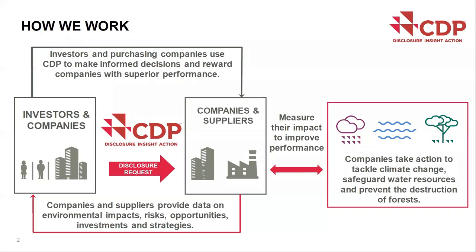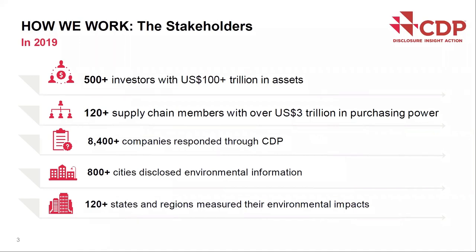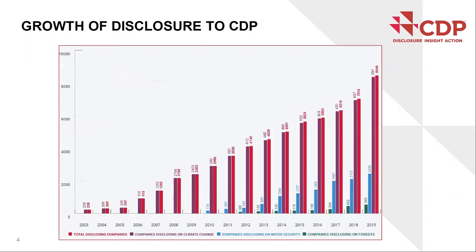CDP was born 20 years ago in London. Back then, the 500 biggest listed companies received a request in paper format to disclose emission data from a smaller pool of investor signatories. Every year, CDP receives the mandate from our investors to request companies to disclose environmental information. The total value of assets represented by our investor signatories and members has grown year on year to a total of over a hundred trillion dollars this year. Moreover, our platform is utilised by a network of big purchasing companies who, through CDP, request their suppliers to report data on climate change, water security, and deforestation. The number of companies disclosing through our platform increases year on year — this year, more than 8,000 companies have set aside resources to do the CDP disclosure.